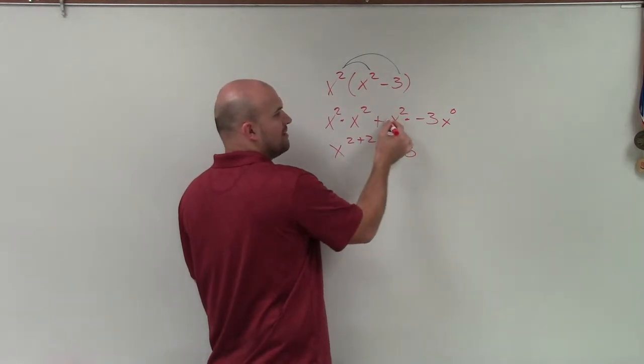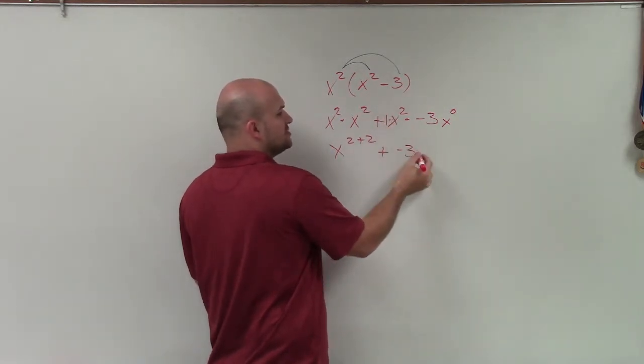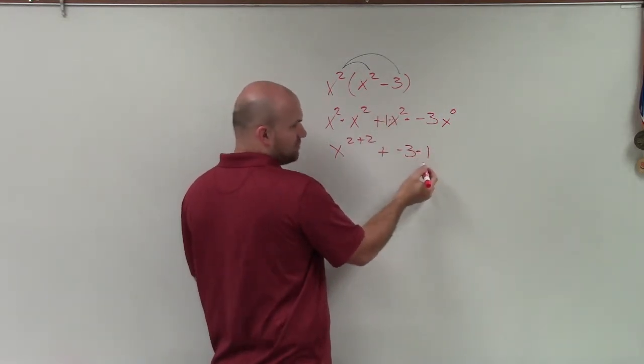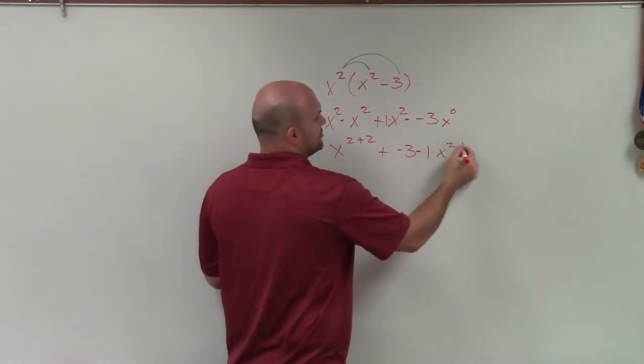Because you multiply the coefficients. Remember, this coefficient can be 1. So it's basically negative 3 times 1 times x to the 2 plus 0.